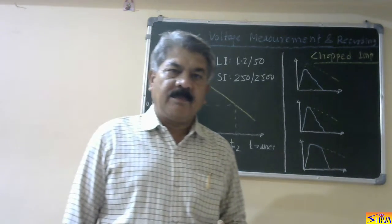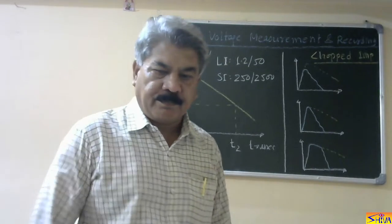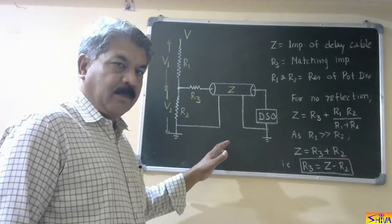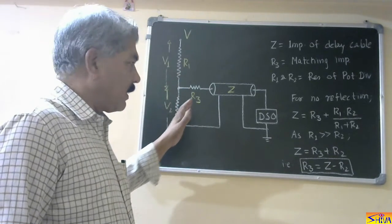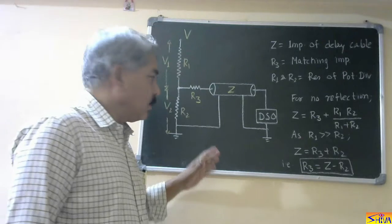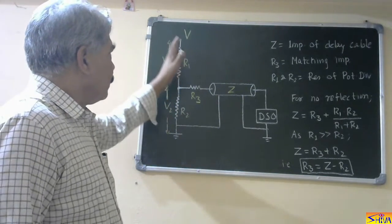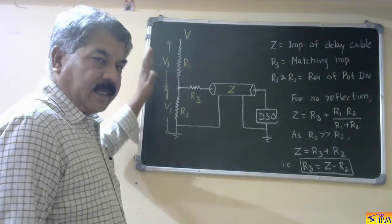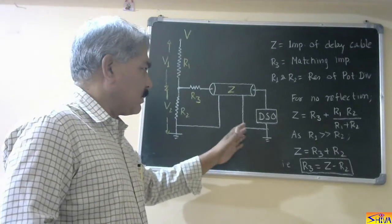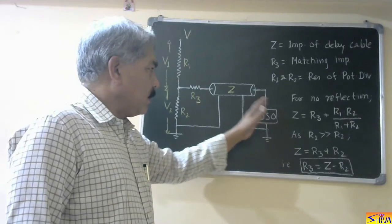So, that recording is done by potential divider plus digital storage oscilloscope. That I will explain now. This is the arrangement for impulse voltage measurement and recording. I have shown here a resistance potential divider, and for recording, a digital storage oscilloscope is there. We can use a capacitance potential divider also. The high voltage transformer, that is the impulse generator, test object, and this resistance potential divider, they all are subjected to high voltage. So, this digital storage oscilloscope is used for measurement purpose, and the control panel for this impulse generator is also near to this digital storage oscilloscope.